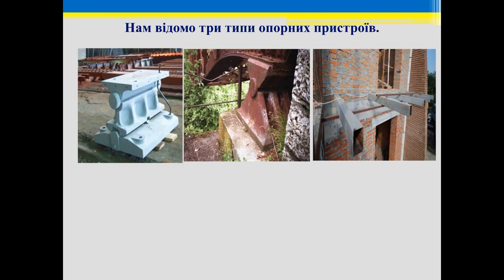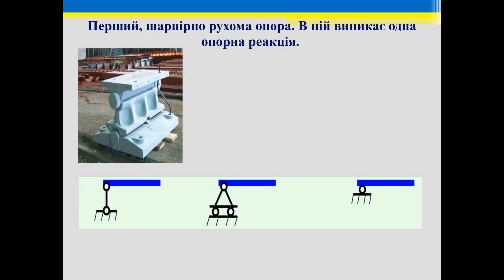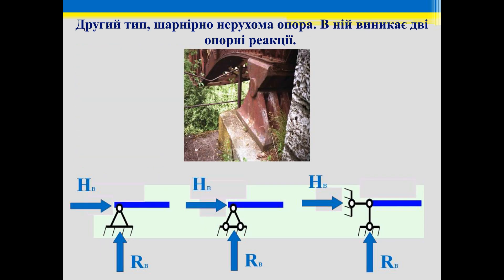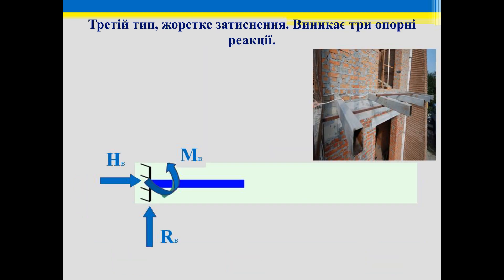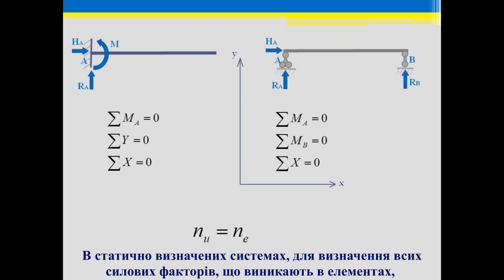There are three types of supports. The first one is the roller support, which has one support reaction. The second one is pinned, which may have two support reactions. And the last one is fixed, which has three support reactions.